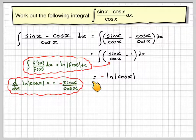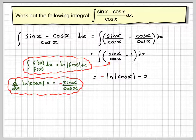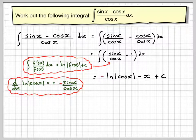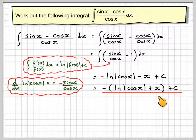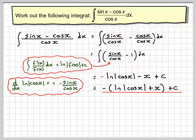So I have to compensate by putting it minus ln of cos x minus x plus c. Can take the minus sign out to get minus ln of cos x plus x in brackets plus c.